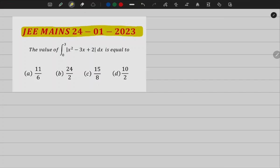The question is: find the value of integral 0 to 3 of modulus of x square minus 3x plus 2 dx. The four options are: option a equal to 11 by 6, option b equal to 24 by 2, option c is 15 by 8, option d is 10 by 2.